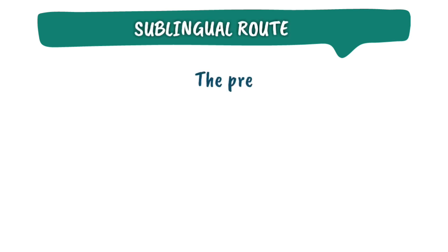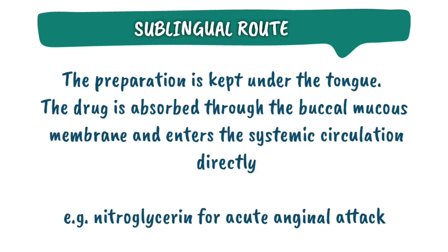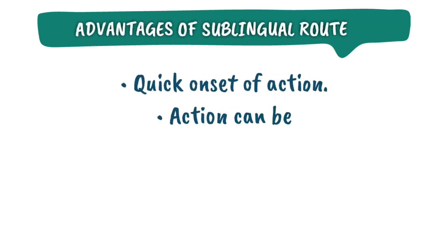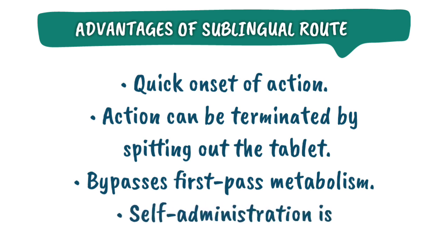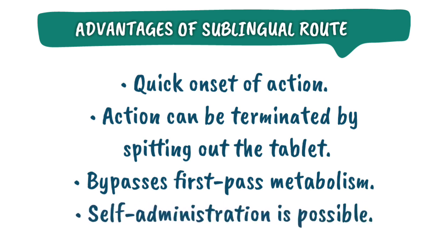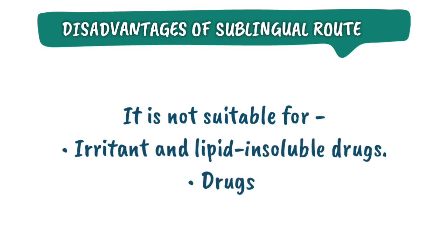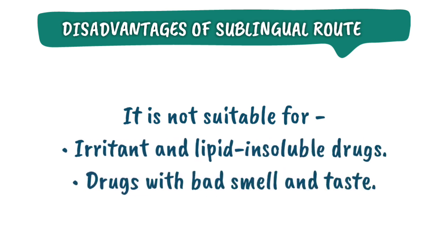Sublingual route. The preparation is kept under the tongue. The drug is absorbed through the buccal mucous membrane and enters the systemic circulation directly — for example, nitroglycerin for acute anginal attack. Advantages: quick onset of action; action can be terminated by spitting out the tablet; bypasses first-pass metabolism; self-administration is possible. Disadvantages: not suitable for irritant and lipid-insoluble drugs, or drugs with bad smell and taste.